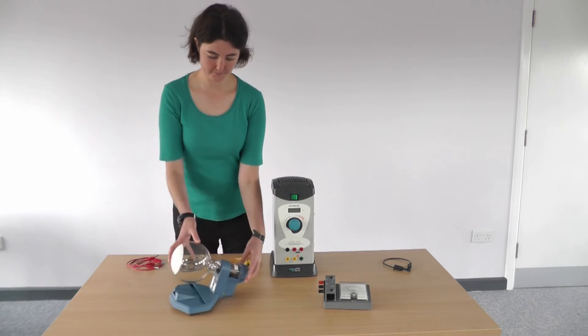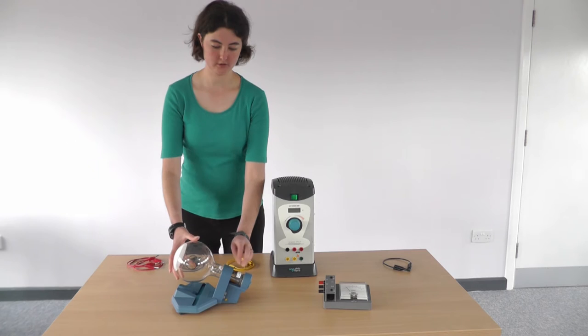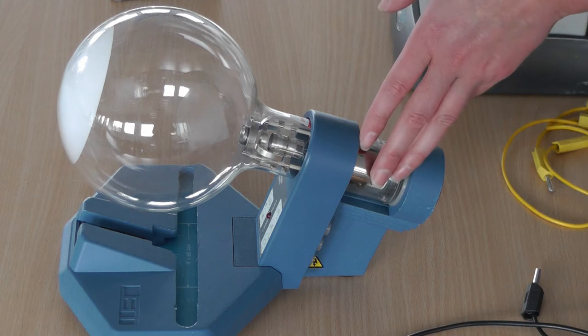This is an electron diffraction tube. It has an electron gun that produces a beam of electrons, and I'll talk about that a bit more in a minute.